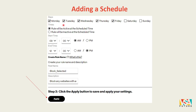Next, add a schedule so this runs automatically without you having to activate it every day. Check mark Monday through Friday, then select 'Rule will be activated at the scheduled time.' Choose a start time and end time — for example, 9 AM to 12 PM when classes start and end — so that during those hours your child cannot access any blocked content. Then hit 'Apply.'